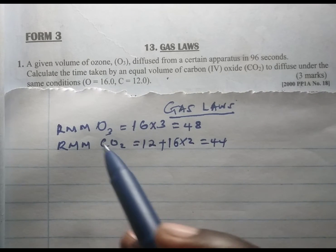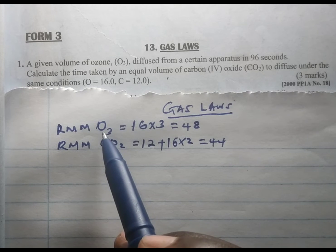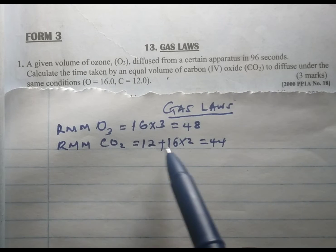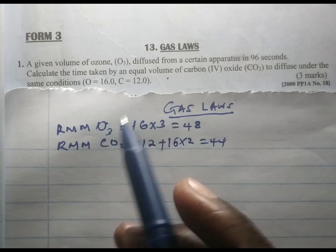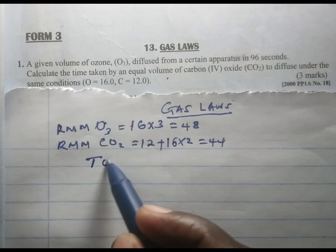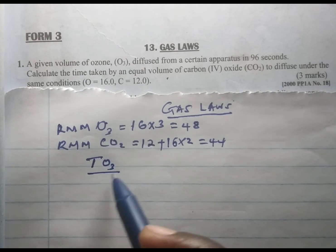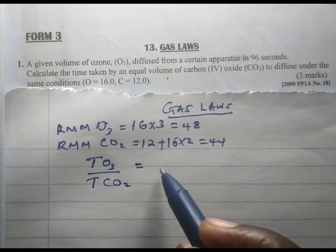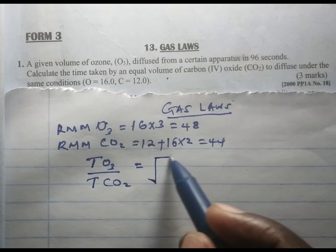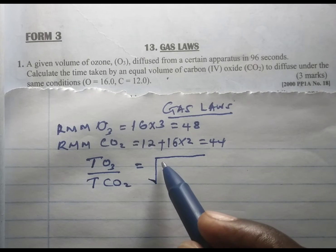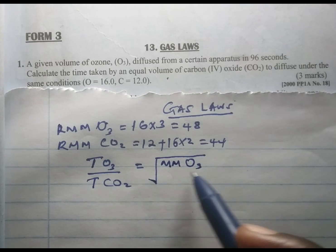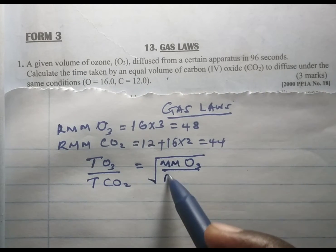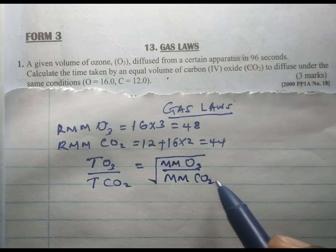We have been given the time of ozone; we are supposed to look for the time of carbon dioxide. We know when we are considering time, we say time of ozone divided by the time of carbon dioxide, the two will always be directly proportional to the square root of the molecular mass of ozone divided by the molecular mass of carbon dioxide.